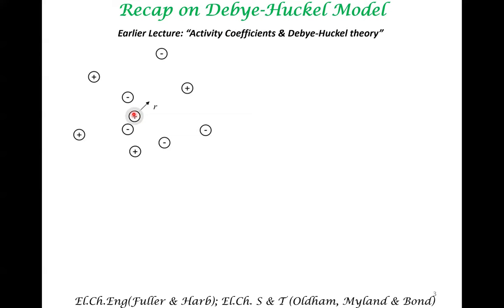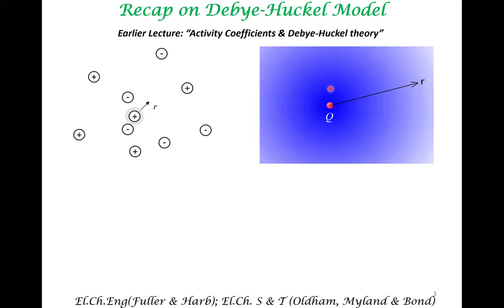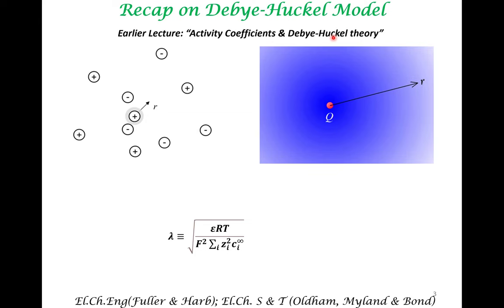In the Debye-Hückel model, when you have a positive charge, the entire solution might be neutral, but because of the presence of that positive charge the rest of the solution will contribute a negative charge. If this central charge is positive, there is more negative charge adjacent to it; as you go far away from this positive charge the extent of negative charge decreases, and at sufficiently far distances the entire system becomes charge neutral — there is no excess negative charge.